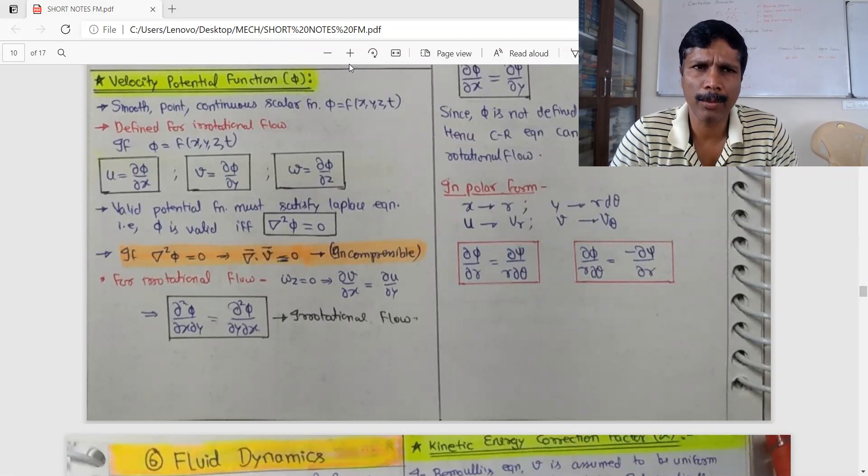What I want to talk about is phi. This is a scalar point function. Phi is the function of x, y, z, t.